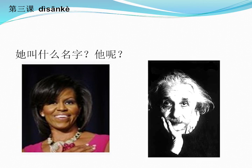First one. 你认识他吗？他叫什么名字？你认识他。他叫Michelle。他呢？他叫什么名字？他叫Albert Einstein。